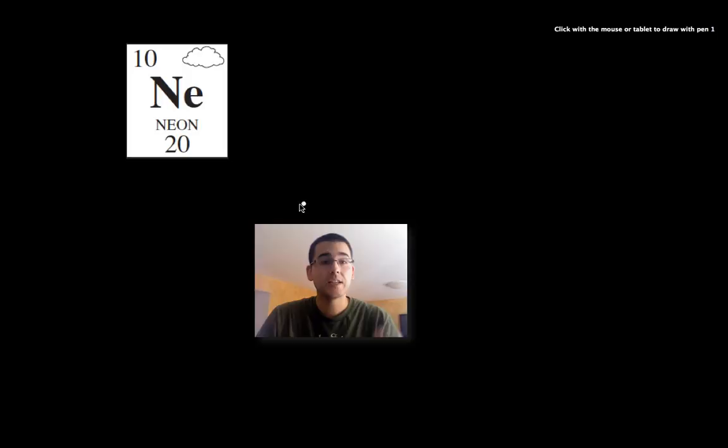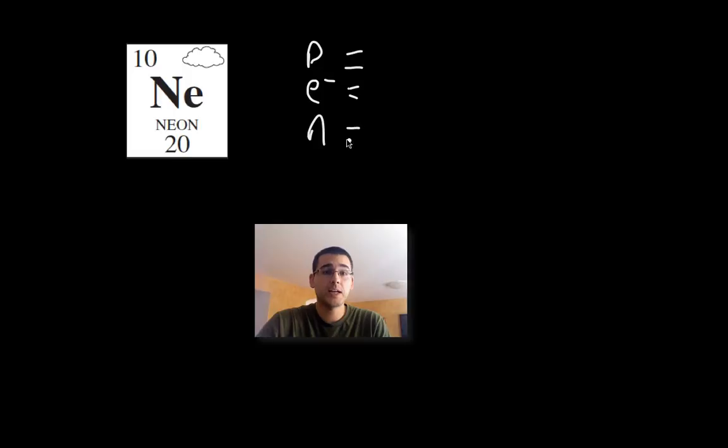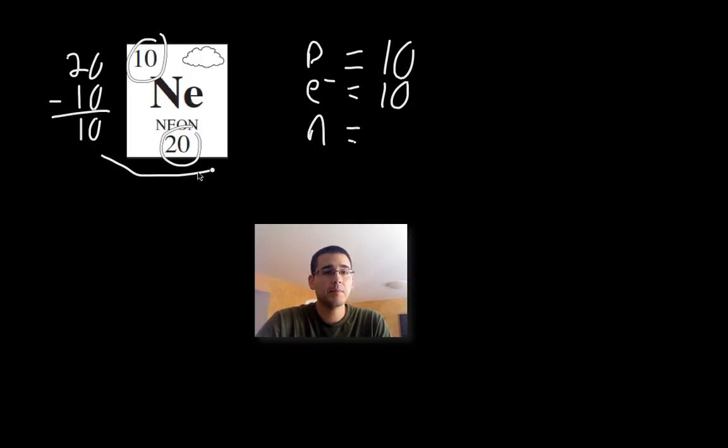Our first example here is neon. Now, in order to draw any atom, there are three things that we need to know: number of protons, electrons, and neutrons. If you remember from a previous podcast, to find the number of protons, you need to use the atomic number. In this case, for neon, it's 10. Now, that atomic number is also equal to the number of electrons. That's also from a previous podcast. And to find the number of neutrons, if you remember, we need to take the atomic weight, which is 20, and do a little subtraction with the atomic number. 20 minus 10 is 10. So we know that neon has 10 protons, 10 electrons, and 10 neutrons.